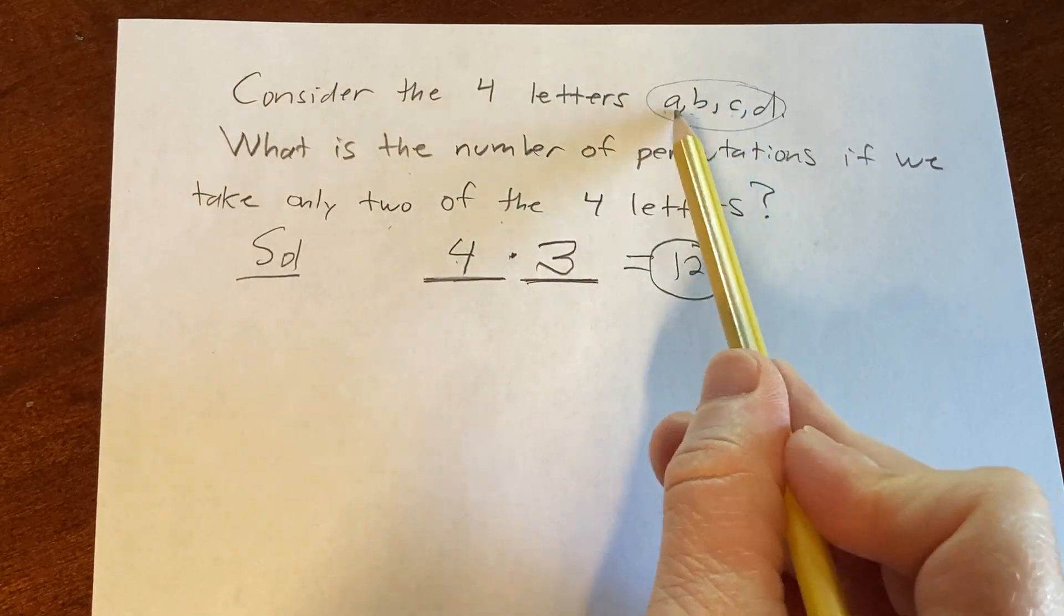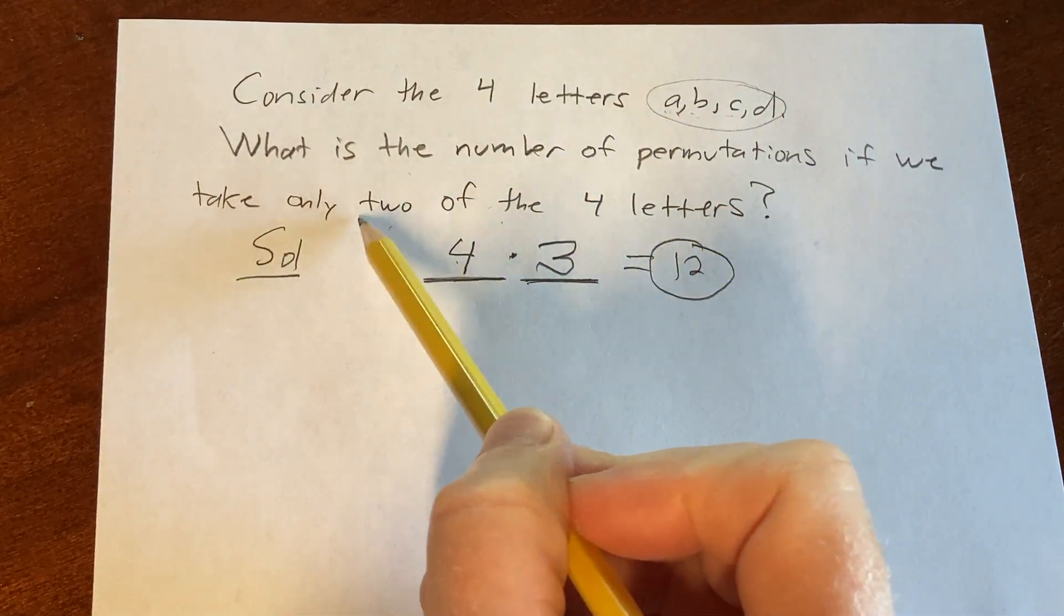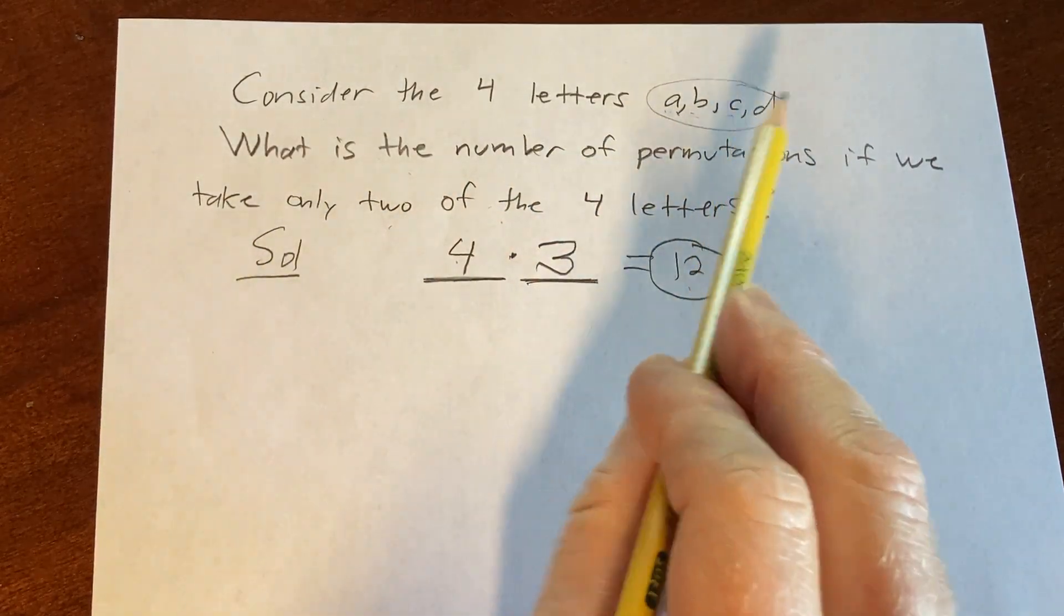So if we have four letters A, B, C, D, and we want to take two of them, there are 12 ways to do that.